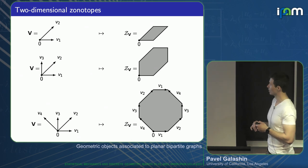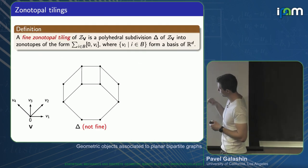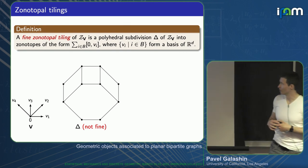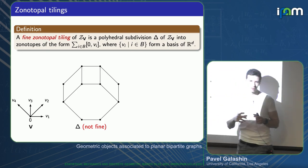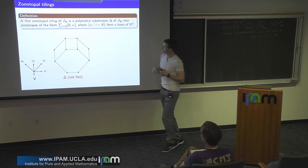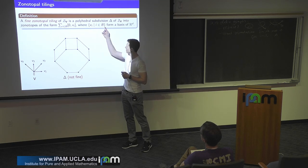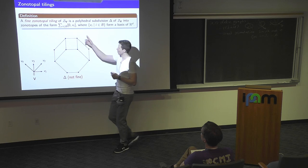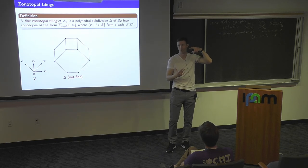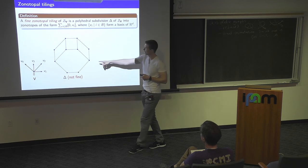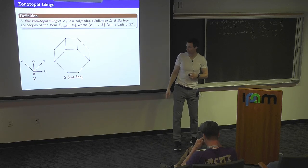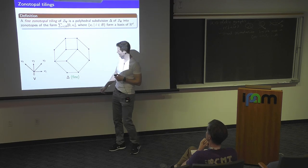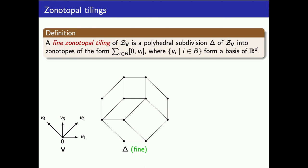Let me define zonotopal tilings. I'm always going to talk about fine zonotopal tilings, which by definition means you subdivide your big zonotope into small zonotopes, and the pieces are as small as possible — meaning you take vectors which form a basis of R^d. The corresponding tile is a parallelotope. This is an example of a not-fine zonotopal tiling because one piece is a hexagon, not a parallelogram. If you subdivide it so every piece is a parallelogram, you get a fine zonotopal tiling.